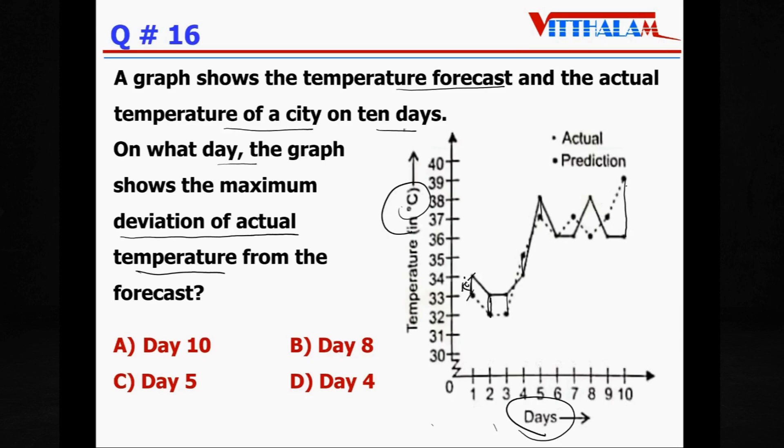The 10th day, 10th day, it is 39 was the prediction and the actual was 36, so 3 degree Celsius deviation. Therefore if you see the distance here it is 38 and this is 36, so 2 degrees. Therefore the answer is Day 10.